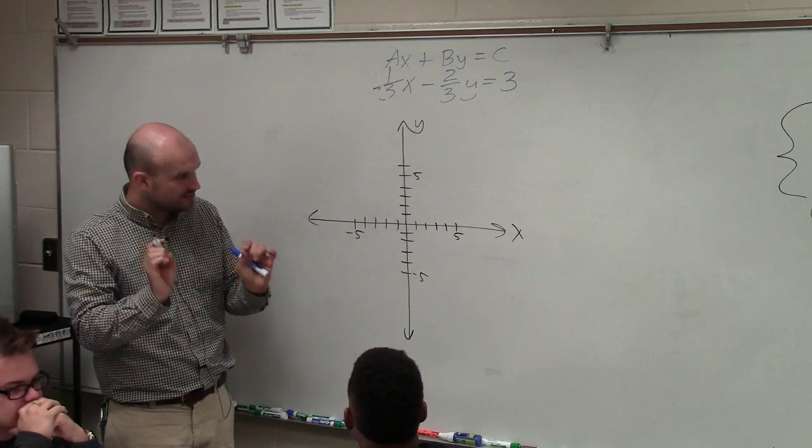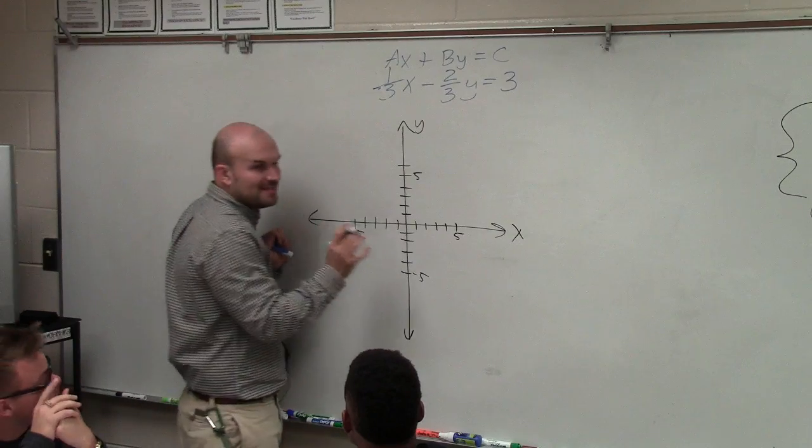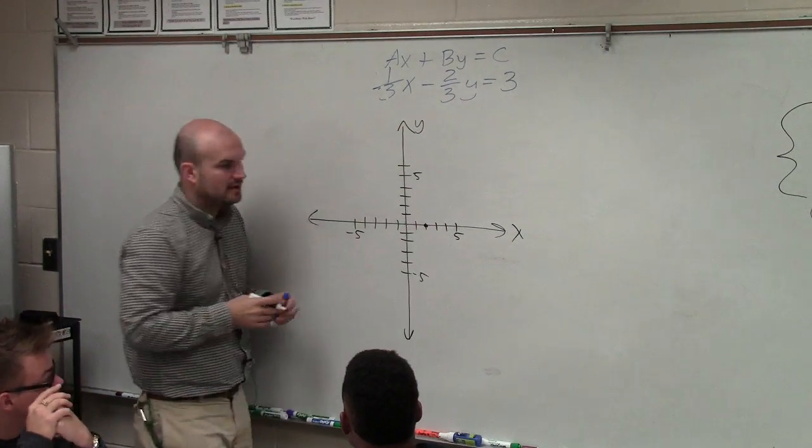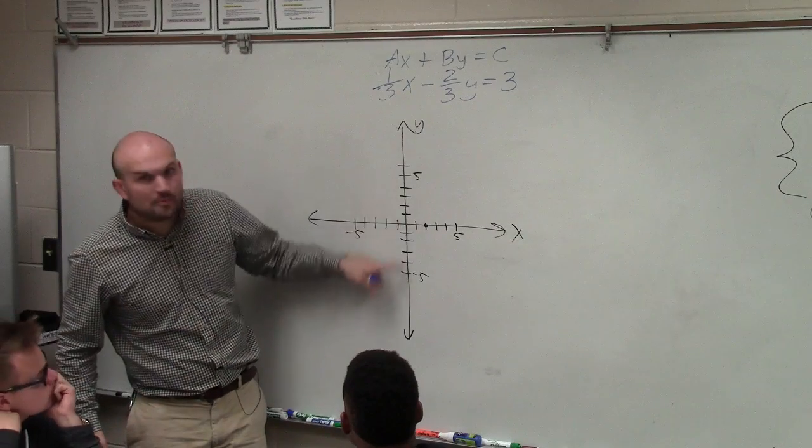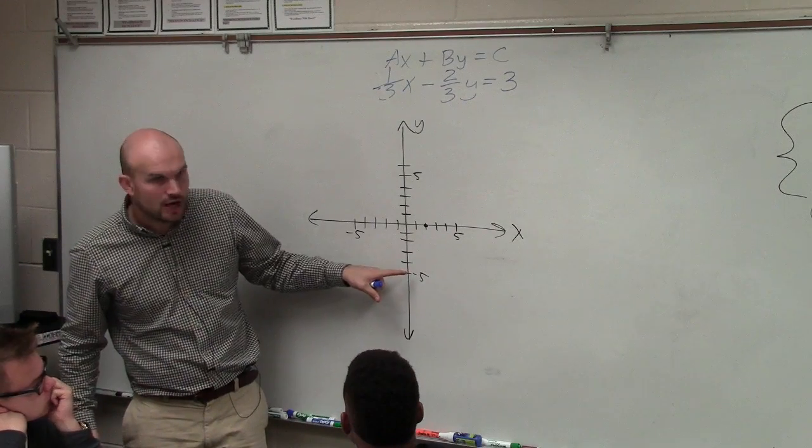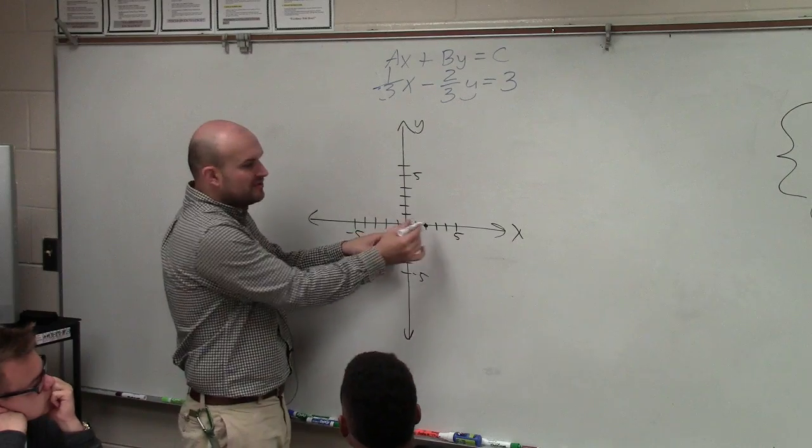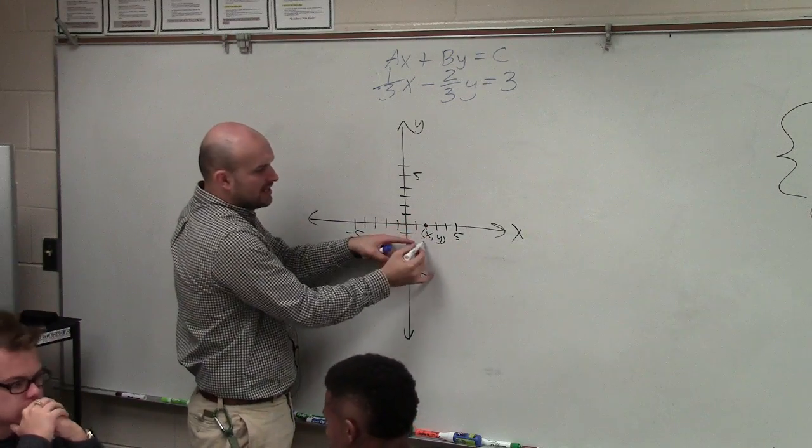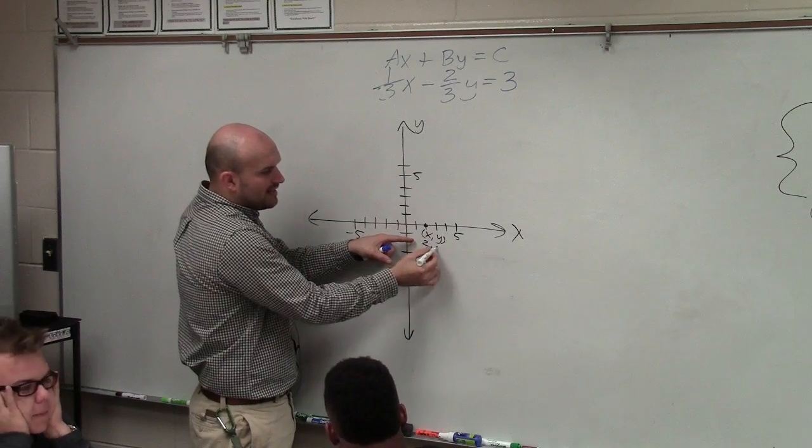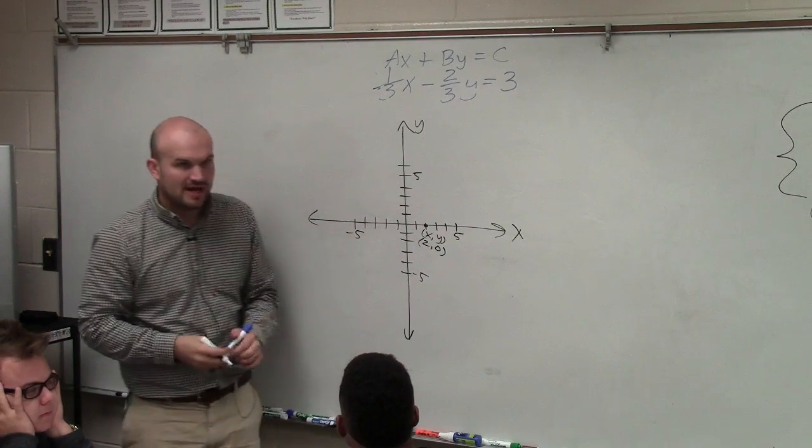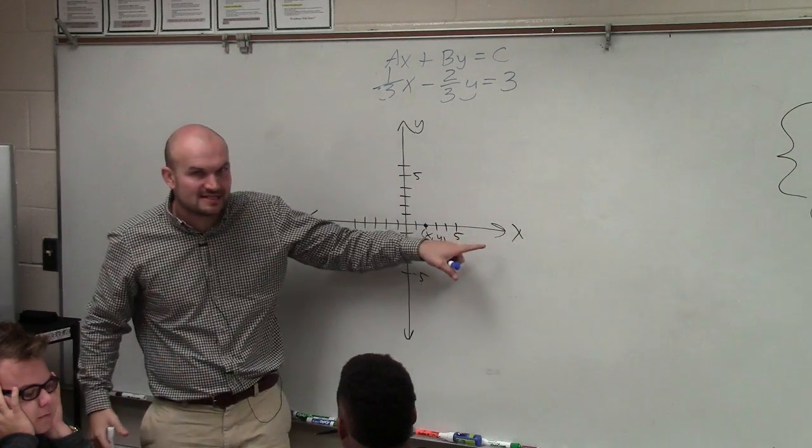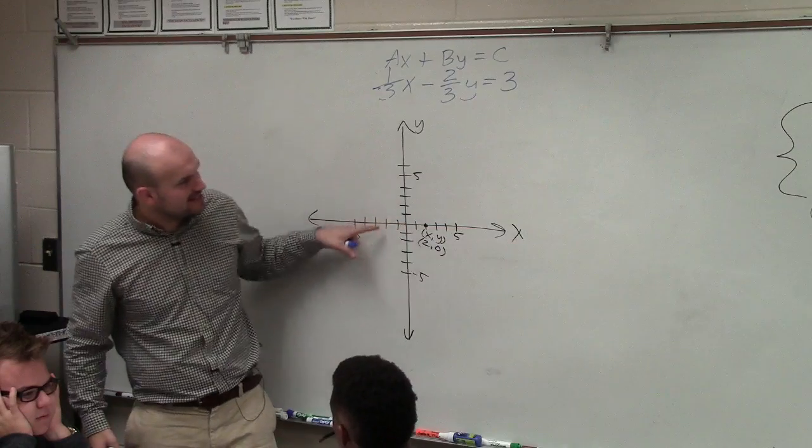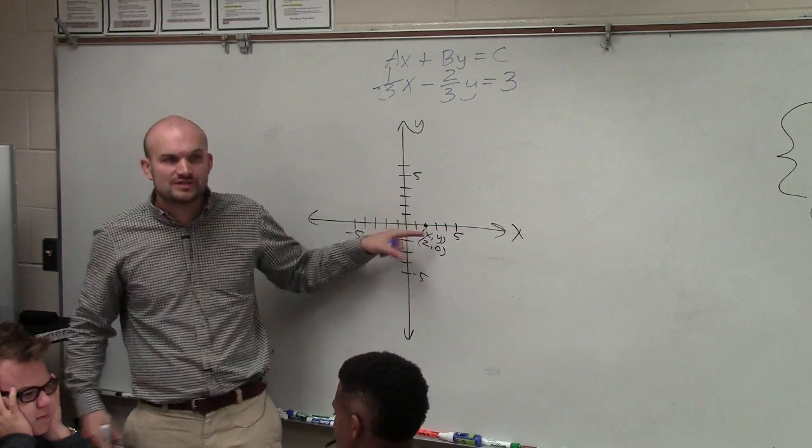Now here's what I want you guys to really understand. If there is a point that lies on the x-axis, let's say this point right here - I have not gone up or down at all, have I? No. So remember, this has an x and a y-coordinate, right? Well, the x-coordinate is 2, the y-coordinate is 0. So if a point lies on the x-axis, the y-value is equal to 0. Any point that lies on the x-axis is what we call the x-intercept. So for the x-intercept, we know y equals 0.